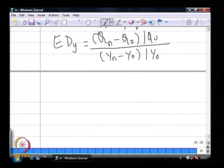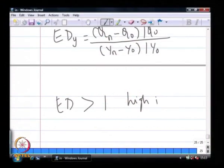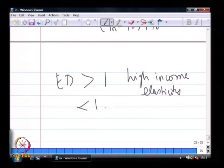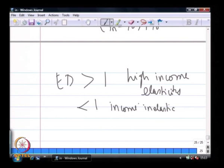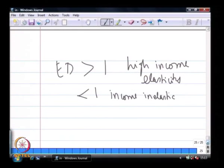If income elasticity of demand is greater than 1, the demand for the item is considered to have high income elasticity. If it is less than 1, the demand is considered income inelastic. Luxury items usually have higher income elasticity, because the moment income increases, consumers no longer need to forfeit luxury purchases.